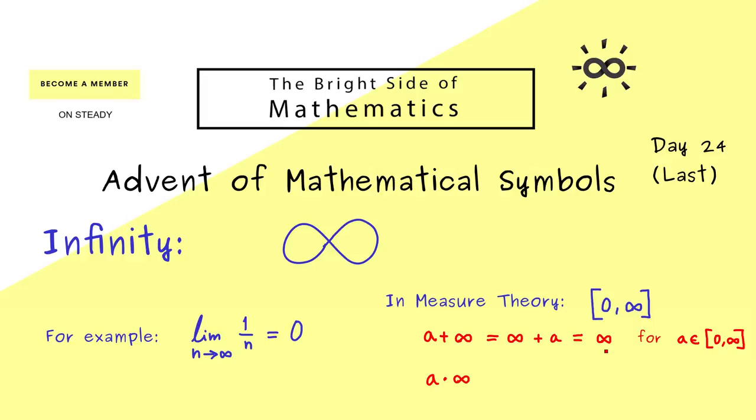And there you already see the only meaningful thing for 2 times infinity is infinity again. In fact this should be our definition for all numbers a, including infinity. So infinity times infinity is again infinity.